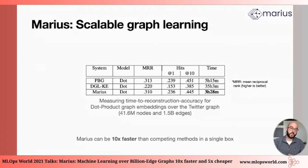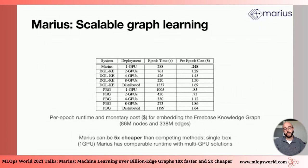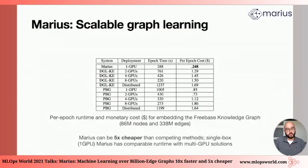In fact, these gains translate further when comparing Marius with distributed versions of these other systems. Marius with a single GPU can achieve similar runtime performance as these systems do with multiple GPUs. What you see here is the per-epoch runtime and the cost associated with it in terms of money for a cloud deployment, for learning embeddings over the Freebase knowledge graph with 300 million edges and 86 million nodes. A single-box Marius deployment has the runtime of multi-GPU solutions — for instance, DGL with eight GPUs is in the same order of magnitude as Marius with one GPU. Because of that, you get a 5x reduction with respect to the money you need to spend for getting access to large-scale graph embeddings.